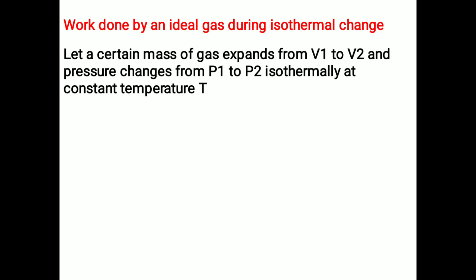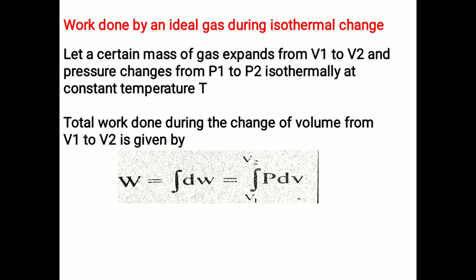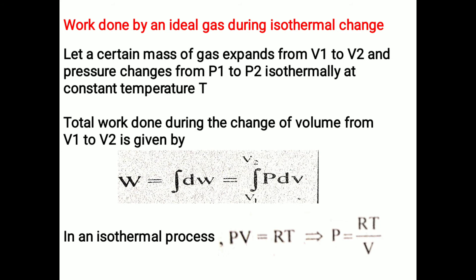Let us find the work done by an ideal gas during isothermal change. Let a certain mass of gas expand from v1 to v2, with pressure changing from p1 to p2, isothermally at constant temperature T. The total work done during change of volume from v1 to v2 is given by W equals integration of p·dv from v1 to v2. In an isothermal process, pv equals RT, so p equals RT/v.